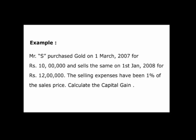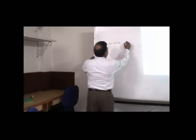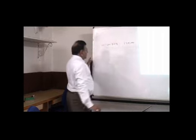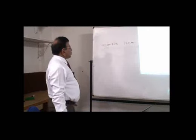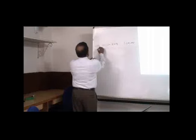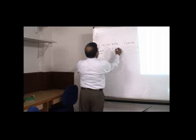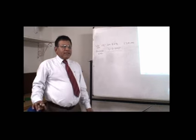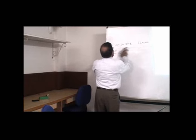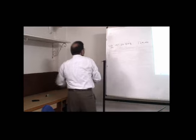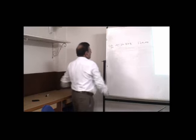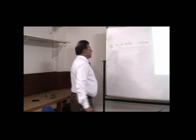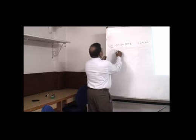Mr. X sells the gold on 1st January 2008 for Rs. 12 lakhs. The purchase date is 1st March 2007 and the sale date is 1st January 2008, meaning he was holding the asset for less than 36 months — so it is deemed to be a short term capital asset and we will calculate the short term capital gain accordingly.